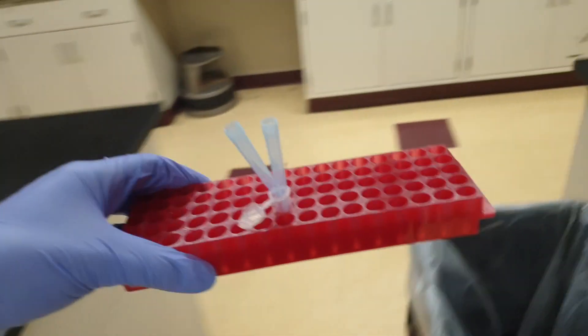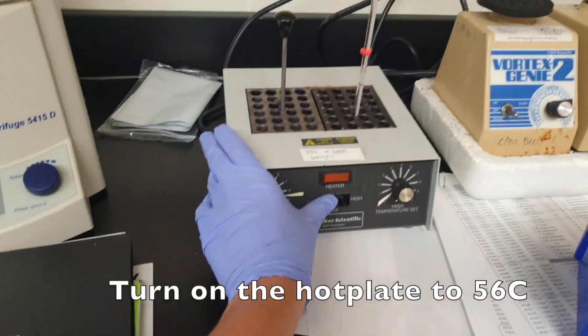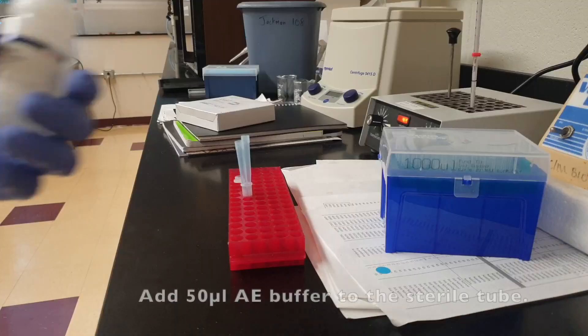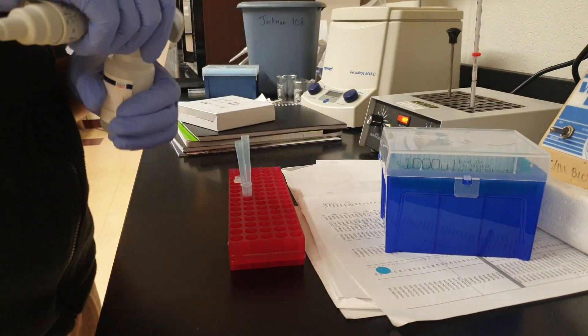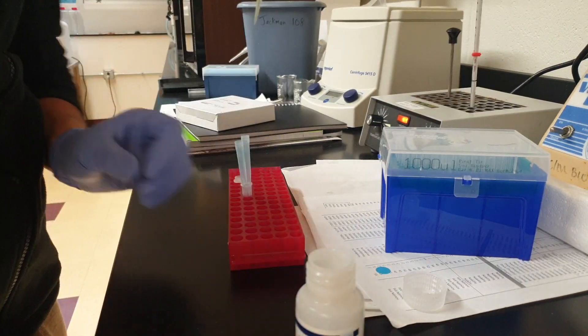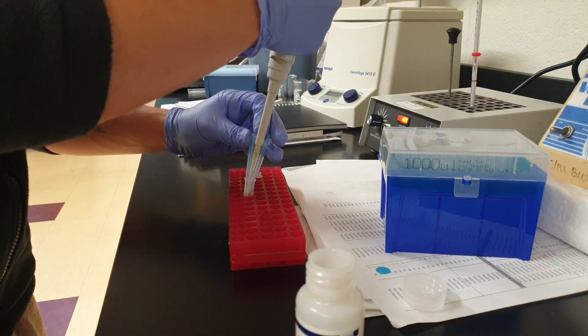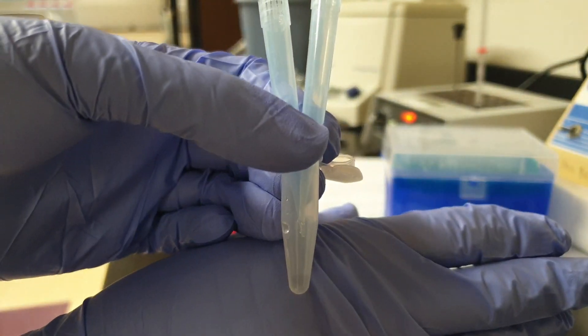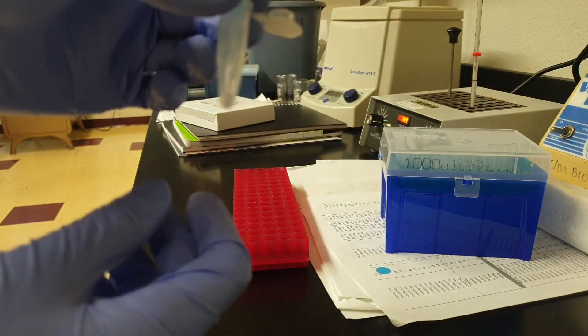Alright, back to the lab. Turn on the hot plate to 56 Celsius. Let's grab some AE buffer. Now, AE buffer right here. We're only going to need 50 microliters. And then just put it into the 1.5mm tube. So right now what we have is two tips and 50 microliters of AE buffer.